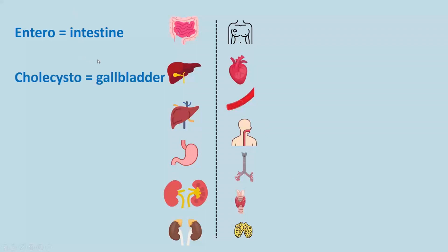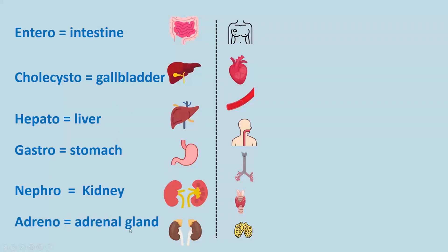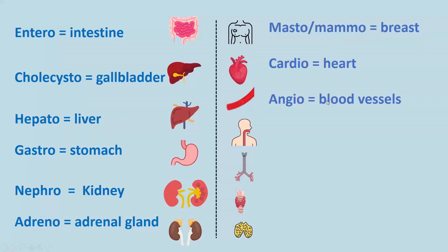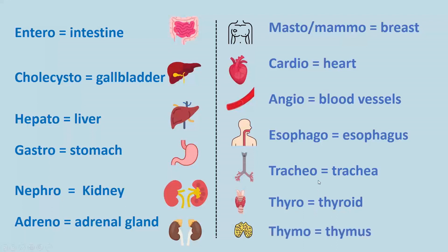Next, medical term roots for organs: Entero is intestine. Cholecysto is gallbladder. Hepato is liver. Gastro is stomach. Nephro is kidney. Adreno is adrenal gland. Masto or mammo is breast. Cardio is heart. Angio is blood vessels. Esophago is esophagus. Tracheo is trachea. Thyroid is thyroid glands. Thymo is thymus.